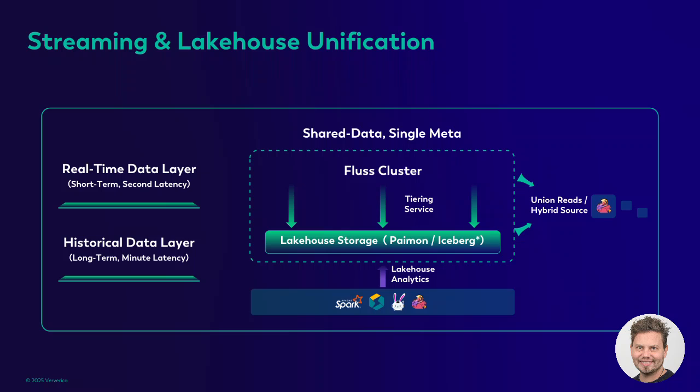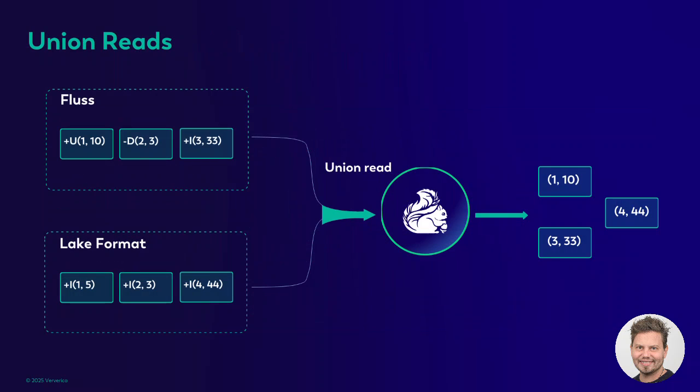An important aspect is the combination of historical and real-time data through what is called union reads. With union reads, historical data is stored in the lakehouse and real-time data is stored in Fluss. In batch reading scenarios, compute engines like Flink can perform union reads across Fluss and lakehouse storage to achieve data analysis with freshness in seconds. When running a query, data from the lake format is combined with real-time data written in Fluss, and the end result includes the latest records.